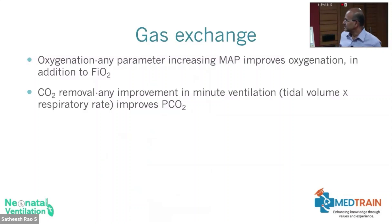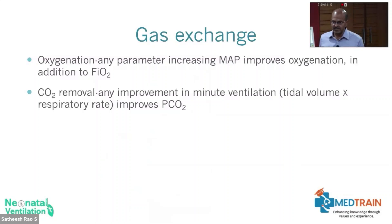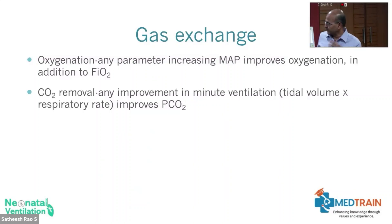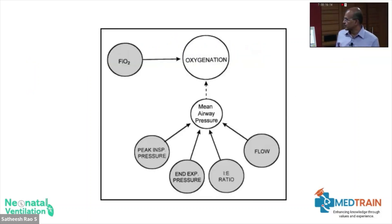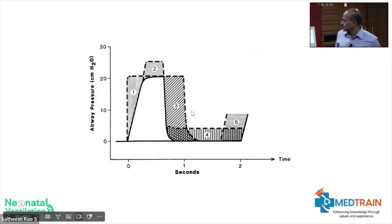For gas exchange: any parameter that increases mean airway pressure (MAP) improves oxygenation, in addition to FiO2. Remember oxygen is toxic, so use FiO2 carefully. For carbon dioxide removal, anything that increases minute ventilation — tidal volume times respiratory rate — increases CO2 washout. Oxygenation is affected by FiO2 on one side and MAP on the other; any of the ventilator parameters that alter the area under the pressure curve will affect MAP.